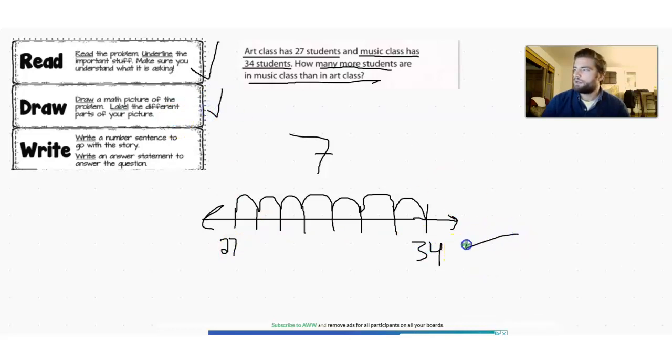One thing you could have done here is you could have written the names of the class. So we know music class is up here with 34 students and we know art class is down here with 27 students.